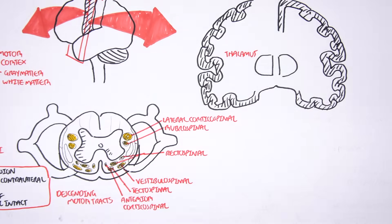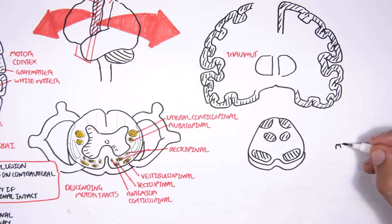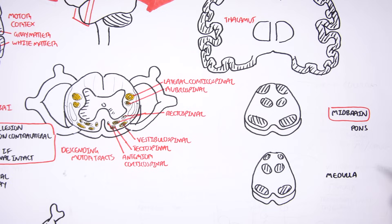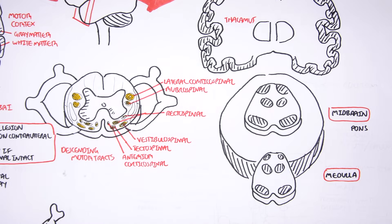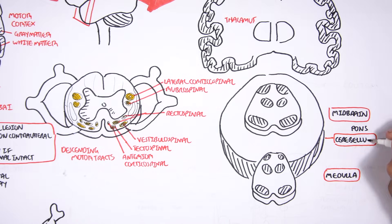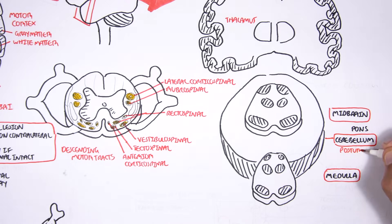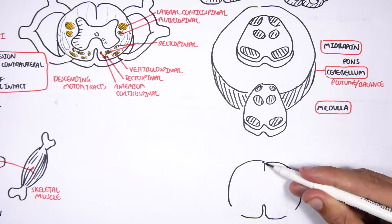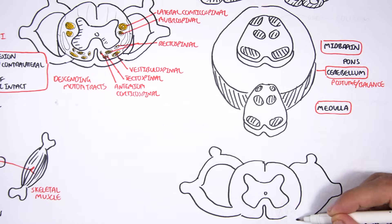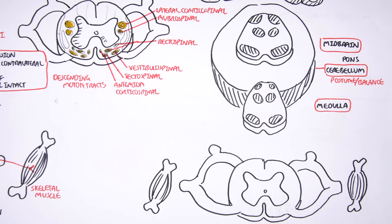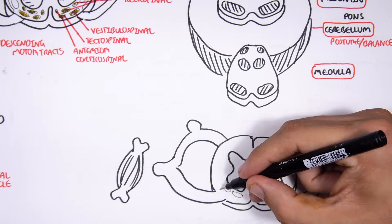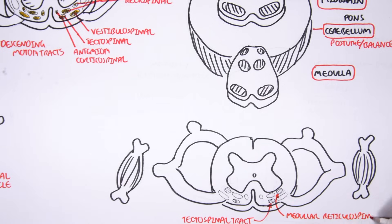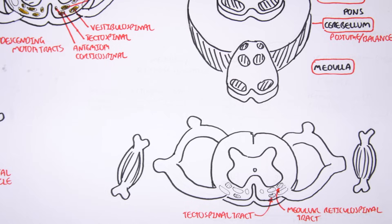Here we are drawing some important structures: the brain, the cortex, the thalamus, the motor cortex, the midbrain, the pons, the medulla, and the cerebellum, which is important and interconnects with all these motor pathways — responsible for coordination, as well as posture and balance. Then of course we have the spinal cord and some skeletal muscles as targets. On the spinal cord level, we can find the tracts. Here is the tectospinal tract and the medullary reticulospinal tract.